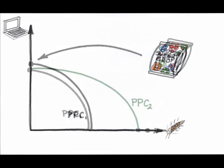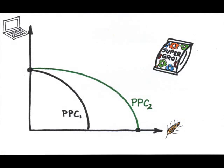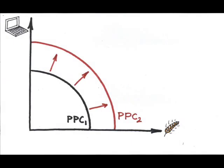So the new PPC, PPC2, does illustrate an expanded ability to produce, but it's an uneven shift. For now though, just to keep things simpler, I'm just going to show even parallel shifts. An increase in resources will result in an outward shift of PPC, demonstrating a greater ability to produce.